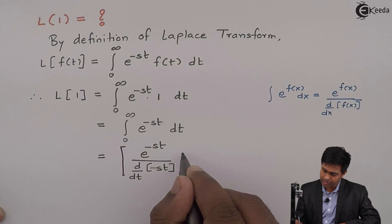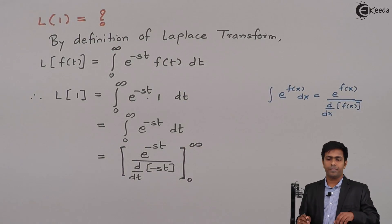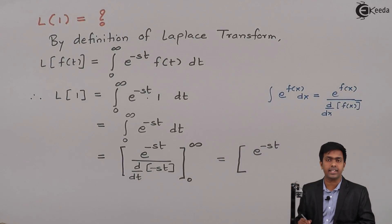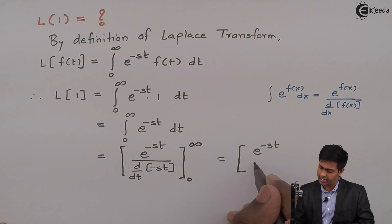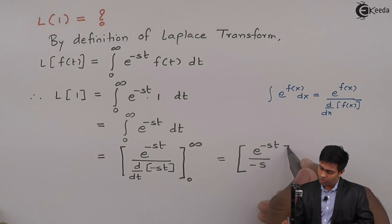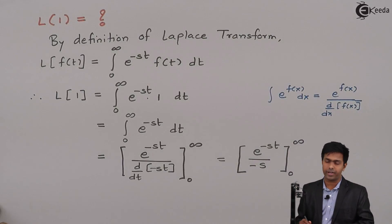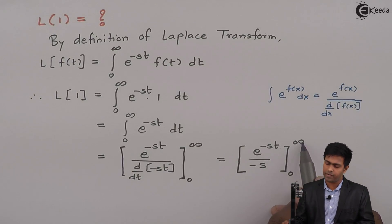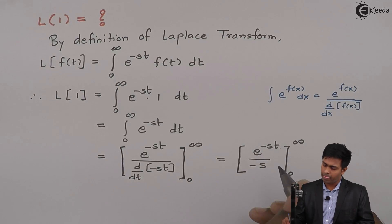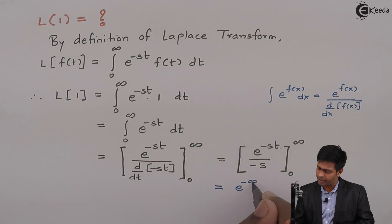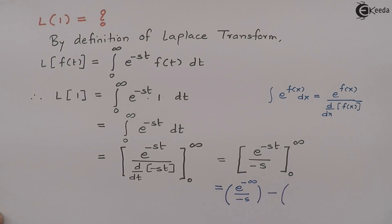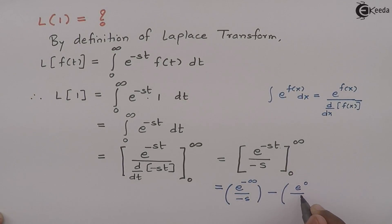We have the limits from 0 to infinity. The derivative of minus st with respect to t is minus s, so this becomes e raised to minus st upon minus s, evaluated from 0 to infinity. Substituting the upper limit t equals infinity gives e raised to negative infinity upon minus s. Then we subtract with the lower limit t equals 0, giving e raised to 0 upon minus s.